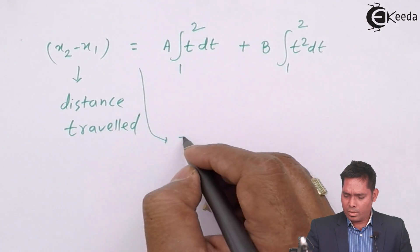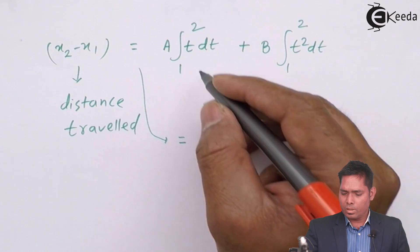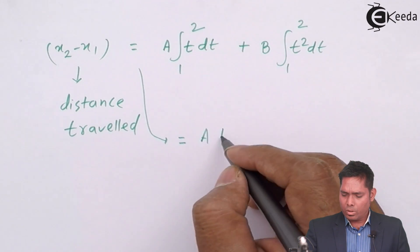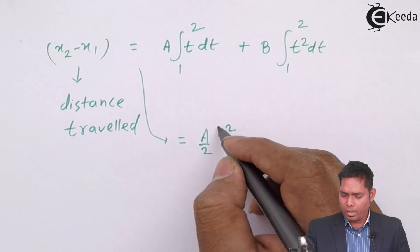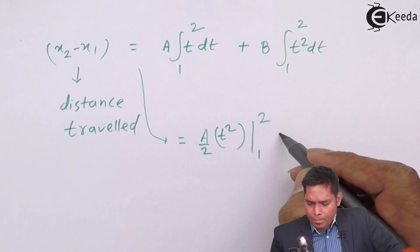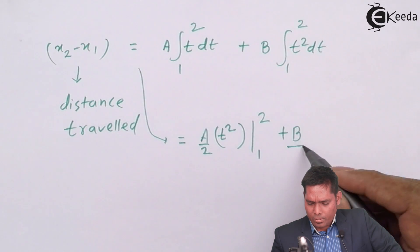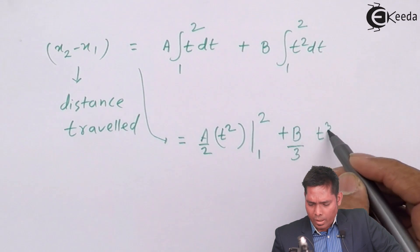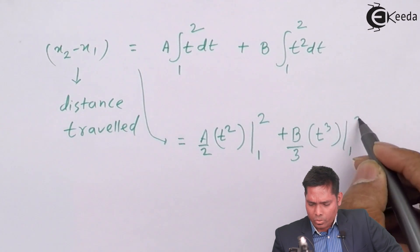You have to solve this one. This equals to A times t square by 2, integration 1 to 2, plus B, here it is t cube by 3, so 3 comes out, t cube, and the limit varies from 1 to 2.